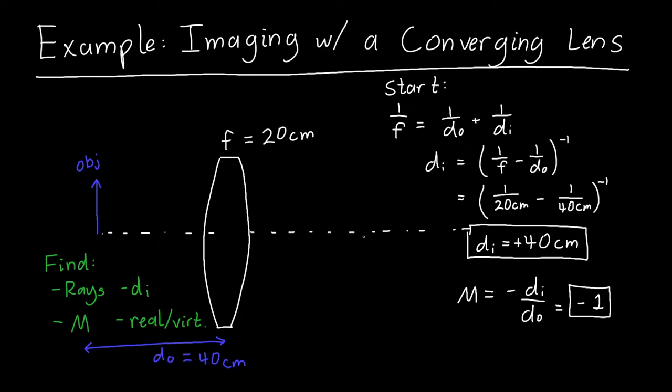And this means that our image should be inverted, so the arrow should be pointing down. So I've got three out of the four things that I wanted. I know di, I know that the image is going to be real, and I know the magnification, it's equal to negative one. So the only thing left is my rays.